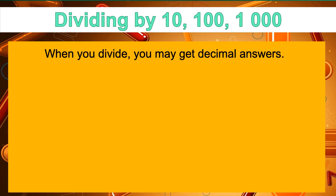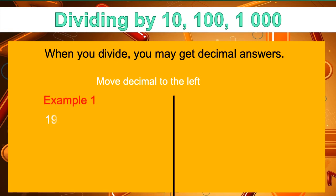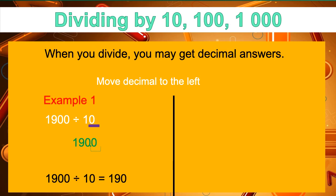Dividing by 10, 100, or 1,000. When you divide, you may get a decimal answer. The method here is to move the decimal to the left. Let's look at example one: 1,900 divided by 10. We begin by writing down our dividend, 1,900. Now we look at our divisor — how many zeros do you see in the number 10? There is one zero. So that means we're moving our decimal point one space to the left. Because this is a whole number, the decimal point is at the back of the number. If we move it one space to the left, it's now relocated, and that means 1,900 divided by 10 is equal to 190.